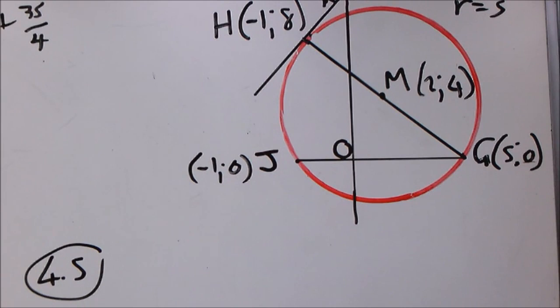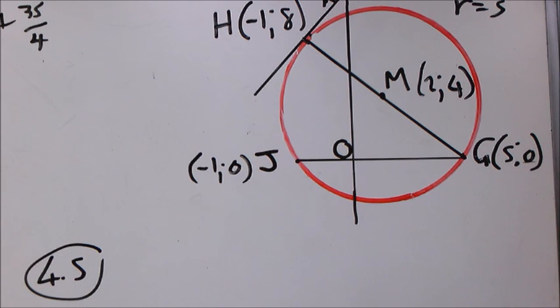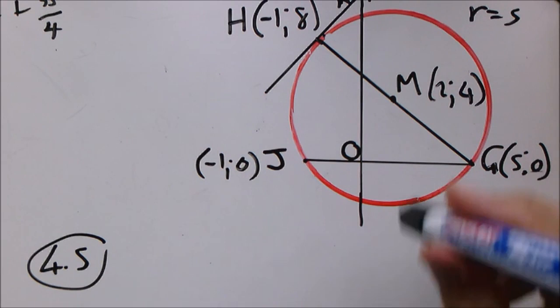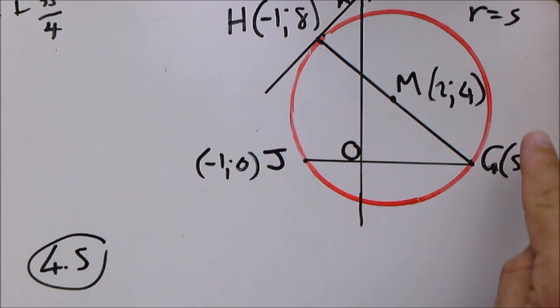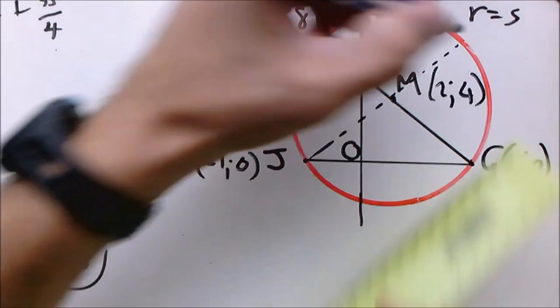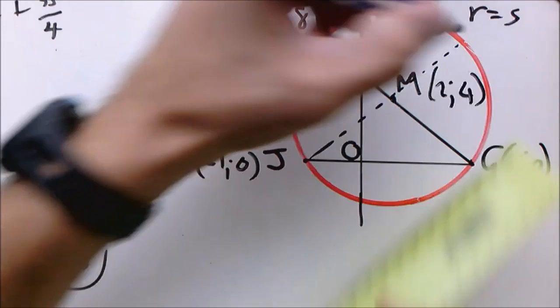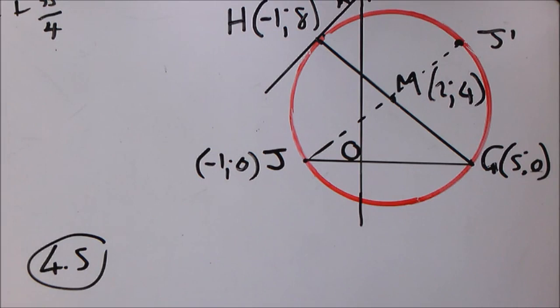So the next question is 4.5, and that asks us to calculate the new coordinates of J if the circle is rotated around the center, rotated 180 degrees around the center M. So here is our point of rotation right there with M. Now J is rotated 180 degrees. It really doesn't matter in which direction we go because it's 180. So we know that the new position of J will be there.